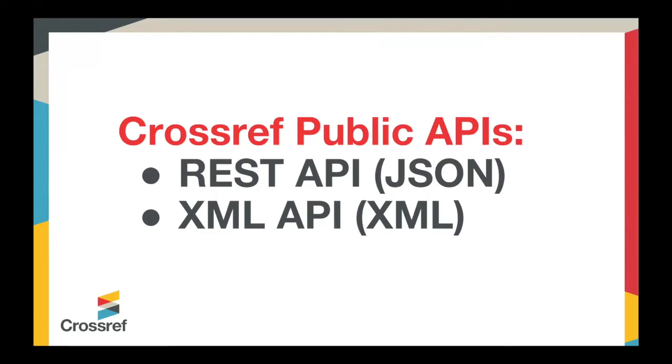It all comes together in the distribution process. Crossref has public APIs for the retrieval of all of our metadata in JSON and in XML. These interfaces are open. All of Crossref's content, or nearly all of it, is openly available.